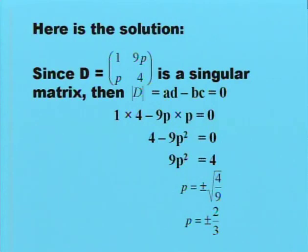Since D equals (1, 9P, P, 4) is a singular matrix, then the determinant of D, written as AD minus BC, equals 0. This gives us 1 times 4 minus 9P times P = 0, which gives us 4 - 9P² = 0, or 9P² = 4. Therefore, P equals plus or minus the square root of 4/9, which gives us P equals plus or minus 2/3.